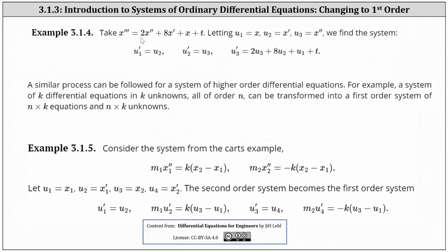We are given x triple prime equals 2x double prime plus 8x prime plus x plus t. We want to change this differential equation to a first-order system. Notice how the highest derivative is x triple prime. This indicates when assigning new variables, we will stop at x double prime. To begin, we let u1 equal x, u2 equal x prime, and u3 equal x double prime. We stop here because we have u3 equals x double prime, which is one order less than the highest derivative in the differential equation.